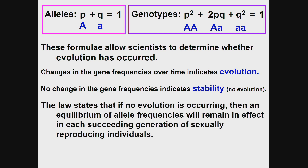The Hardy-Weinberg law states that if no evolution is occurring, then an equilibrium of allele frequencies will remain in effect in each succeeding generation of sexually reproducing individuals. In layman's terms, allele frequencies stay the same from one generation to the next — they do not change — and therefore Hardy-Weinberg equilibrium is in effect.